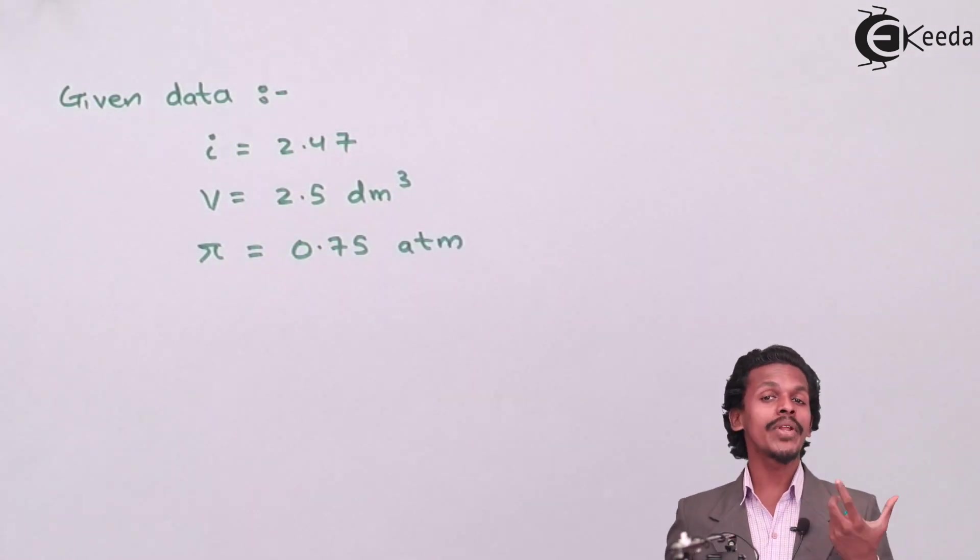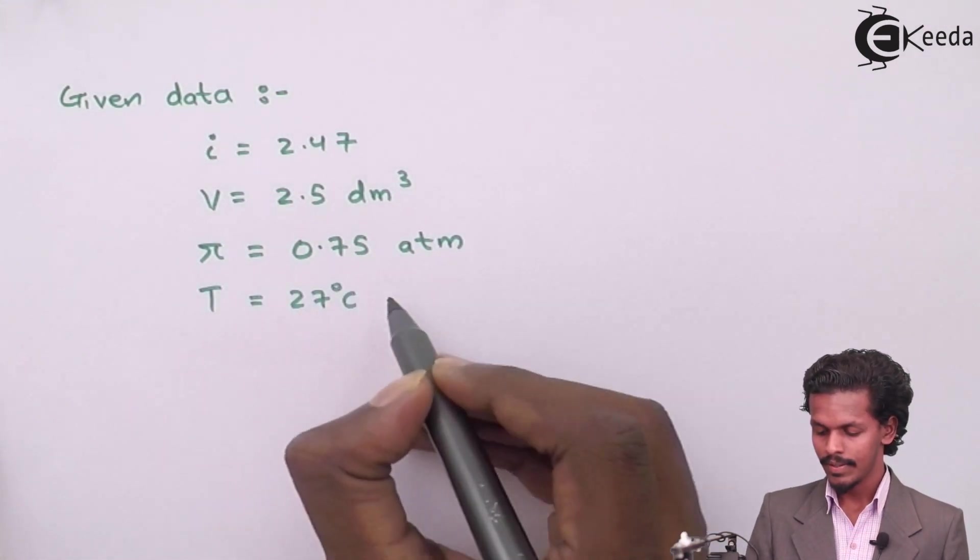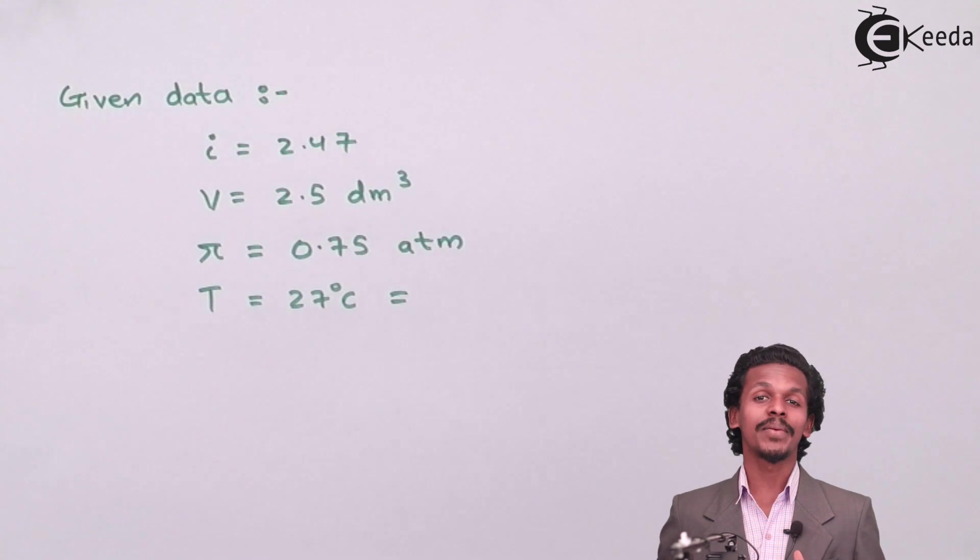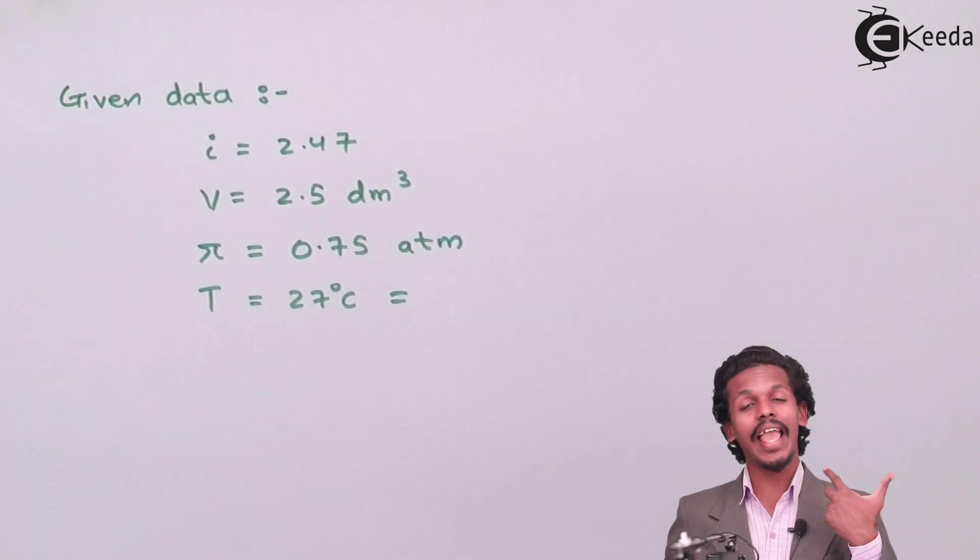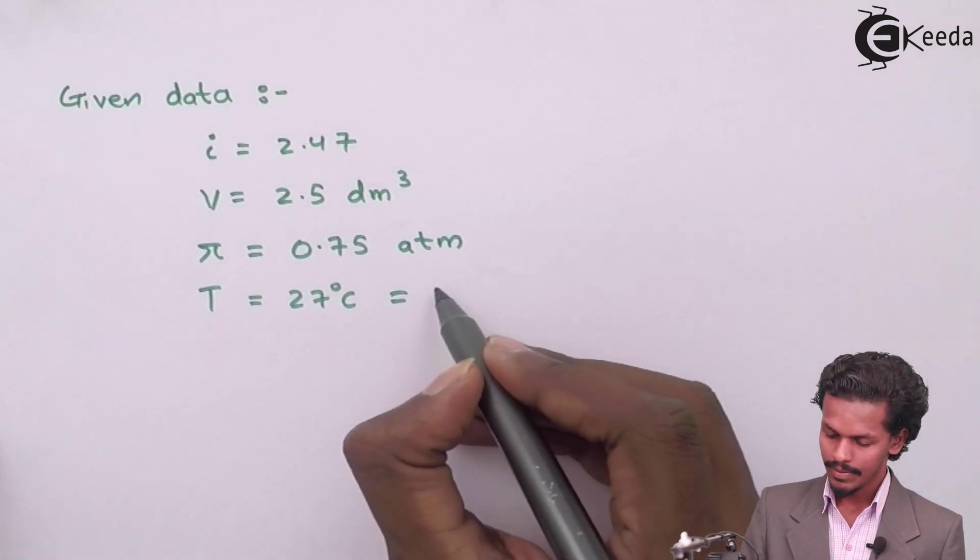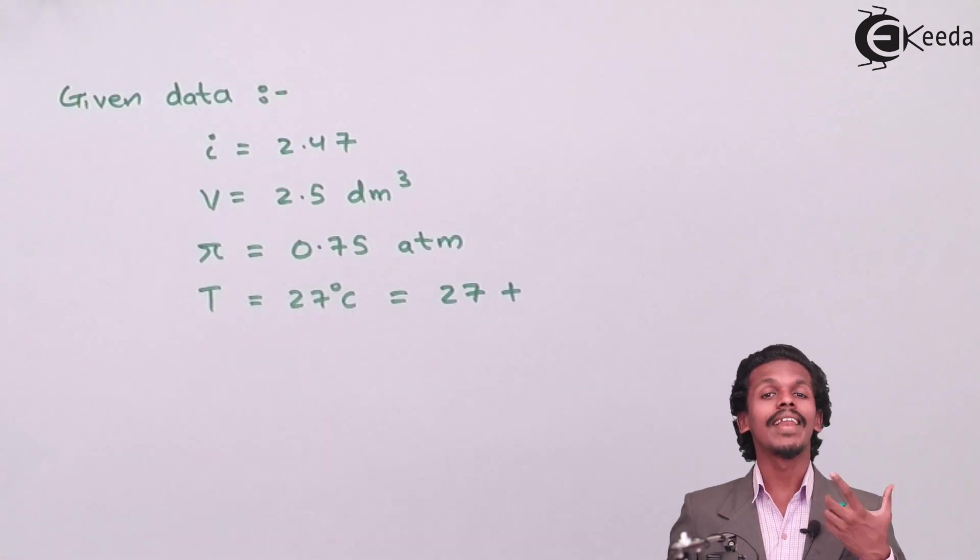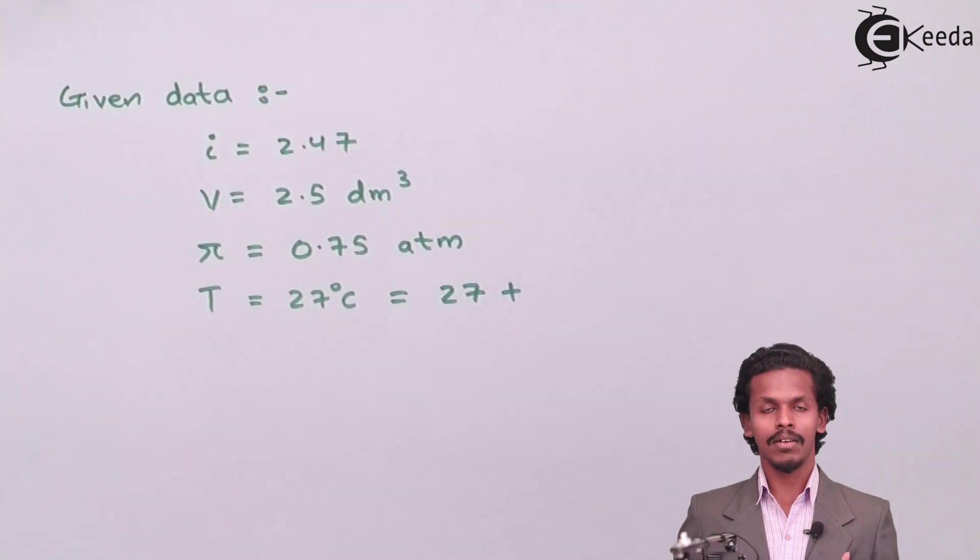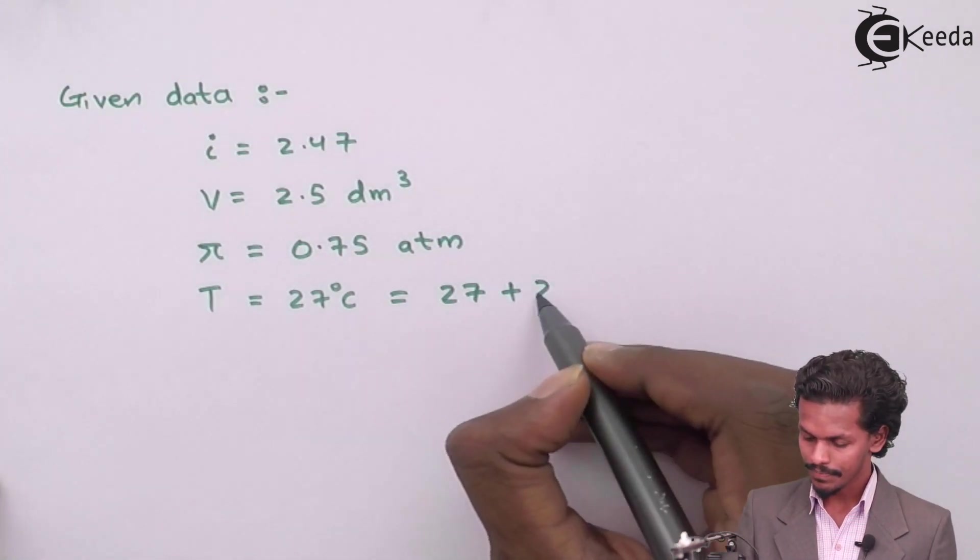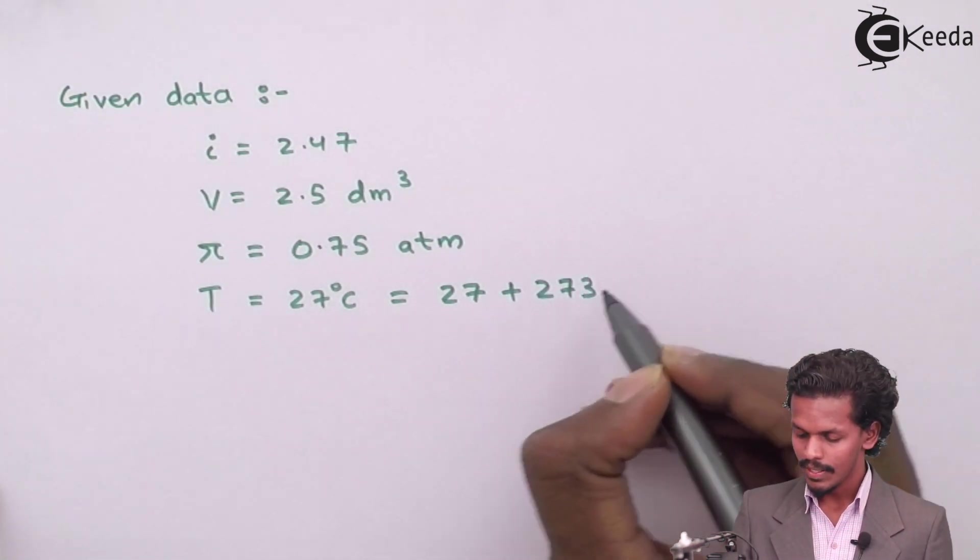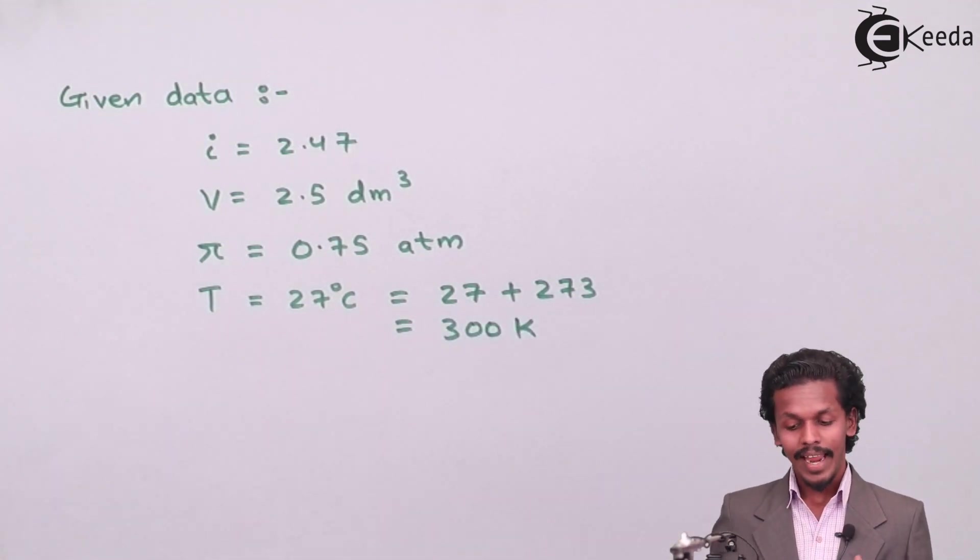Osmotic pressure which is denoted by π is given as 0.75 atmosphere. And moreover the temperature is also given. But we should know that the temperature if it is present in degree Celsius we have to convert into Kelvin. So how can we convert into Kelvin?